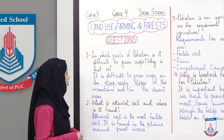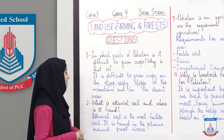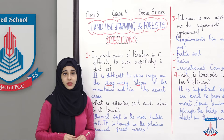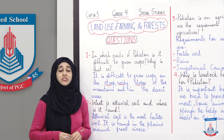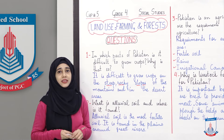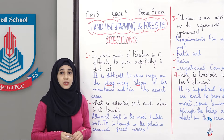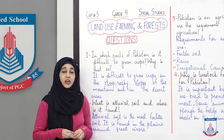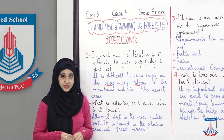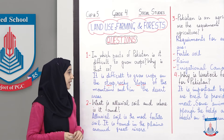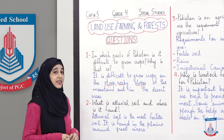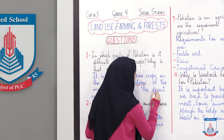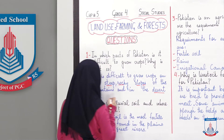slopes یعنی ڈھلوان — of the mountainous and in the desert areas. تو اس کا جواب یہ ہے کہ جو areas steep ہیں، rocky ہیں، they are on mountains — وہاں پہ فصلیں اگانا مشکل ہے — and in the desert areas اور اس کے علاوہ صحرا میں.